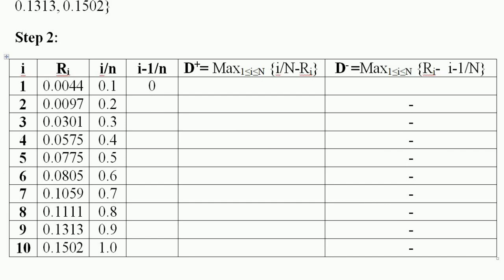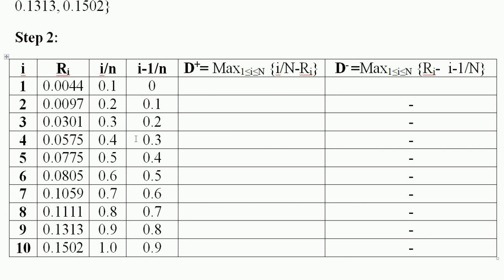Continuing the i/n values: 0.3, 0.4, 0.6, 0.7, 0.8, 0.9. We also need the (i−1)/n values for calculating D−.